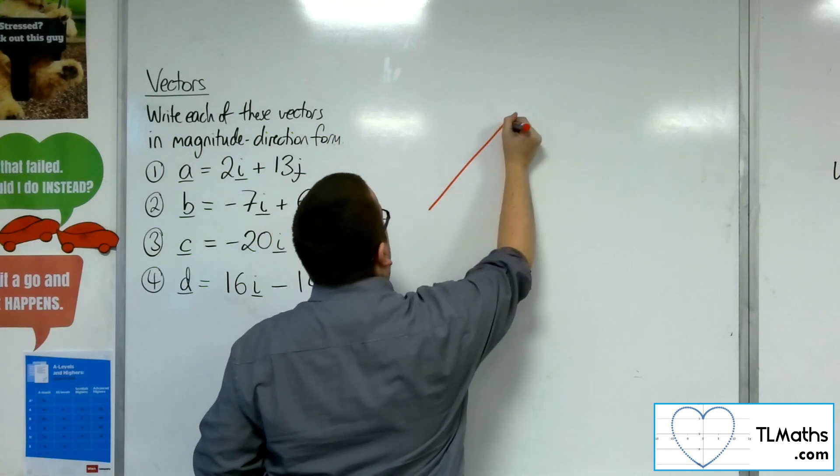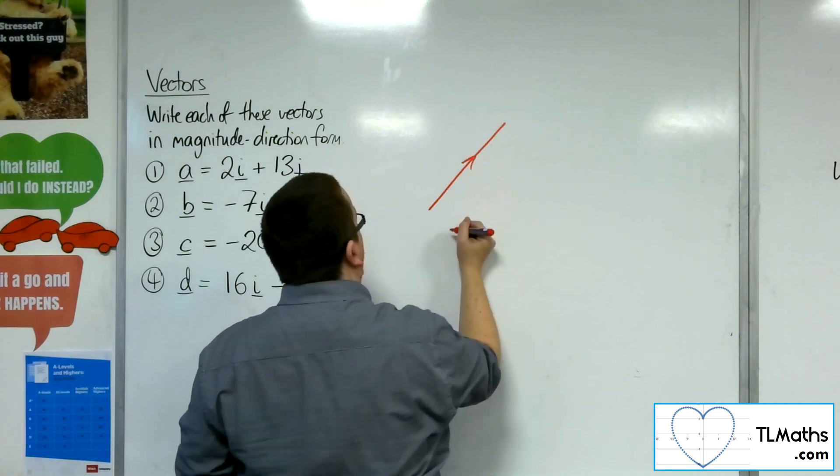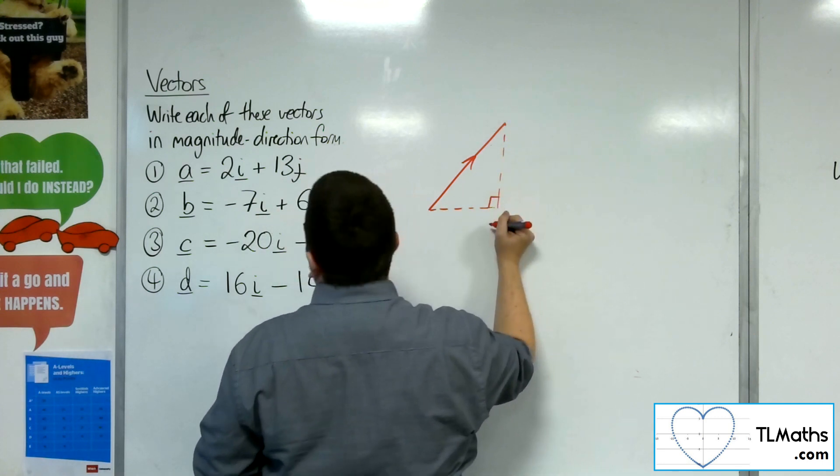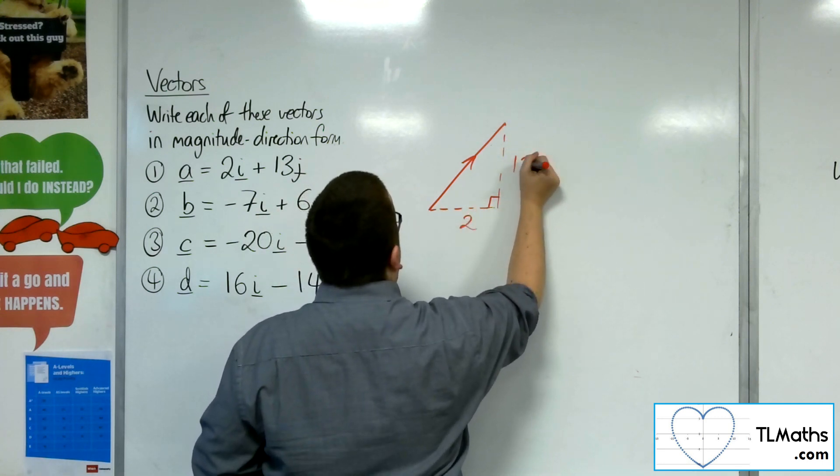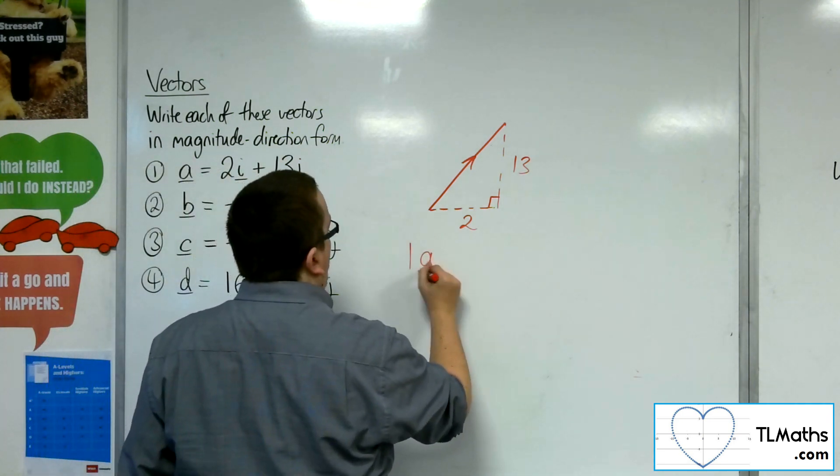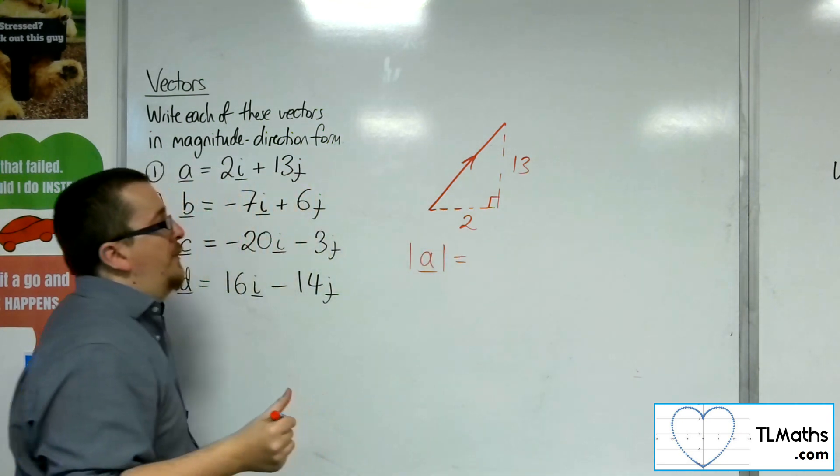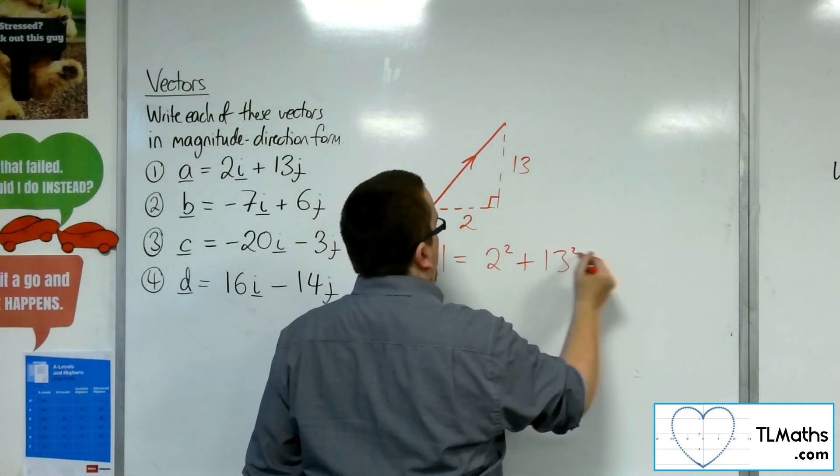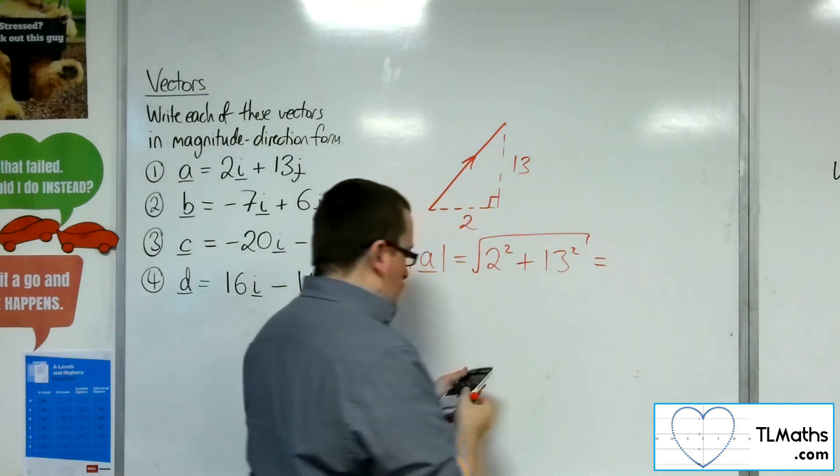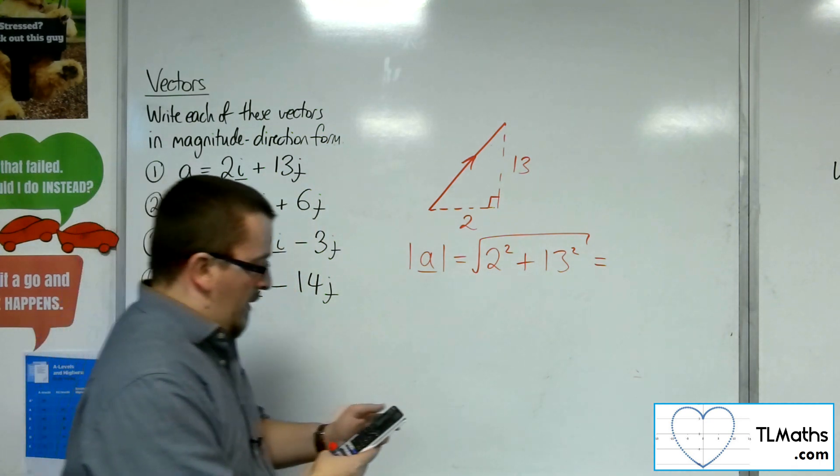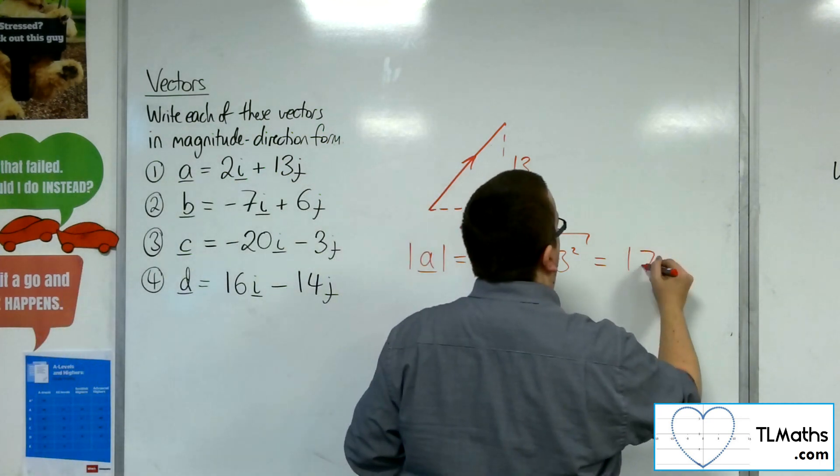So that would be a vector travelling in this direction, that would be going, so for a right-angled triangle, would go 2 along and 13 up. So I can easily work out the magnitude of this vector by square rooting 2 squared plus 13 squared. So square root of 2 squared plus 13 squared is square root of 173.